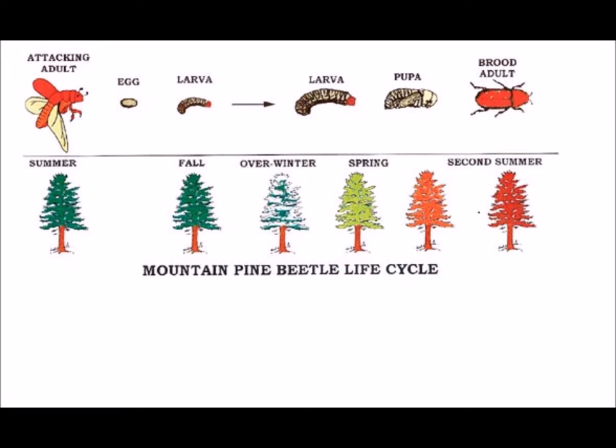The way a bark beetle attacks and kills a tree is initiated by the female beetle, who begins to bore into the bark of a tree while simultaneously releasing pheromones, attracting more and more beetles to the host tree. This process continues as the newly arrived beetles begin to lay eggs within the bark of the tree, eventually leading to larvae and full-grown beetles within the span of one year, taking residence within the host while overwhelming its natural defenses.